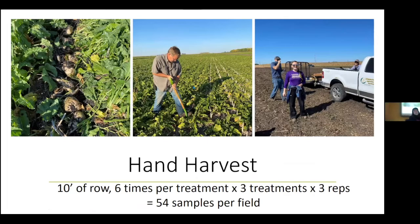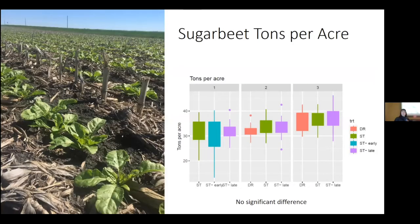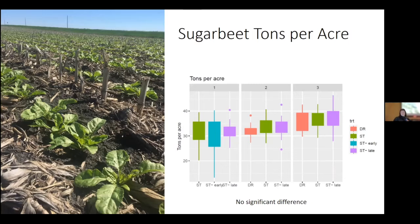We went and hand-harvested 10 foot of rows, six times per treatment — three treatments and three reps at each field — giving us 54 samples per field. What we found is that sugar beet tons per acre did not vary across treatments. These results were all the same within each field. There were differences between fields — Granite Falls, Winthrop, and Danvers had different soil conditions — but within-field tonnage showed really no difference.